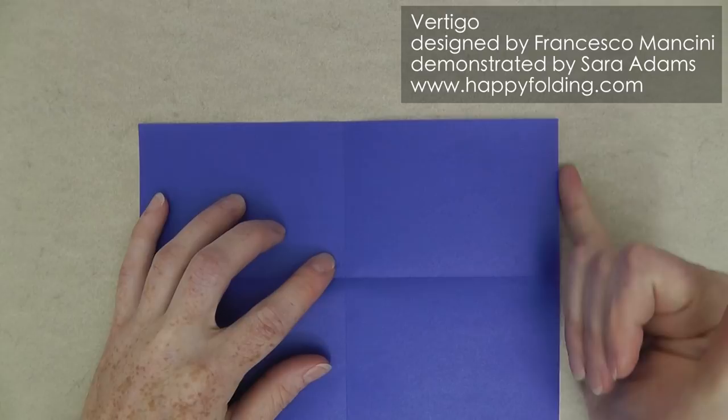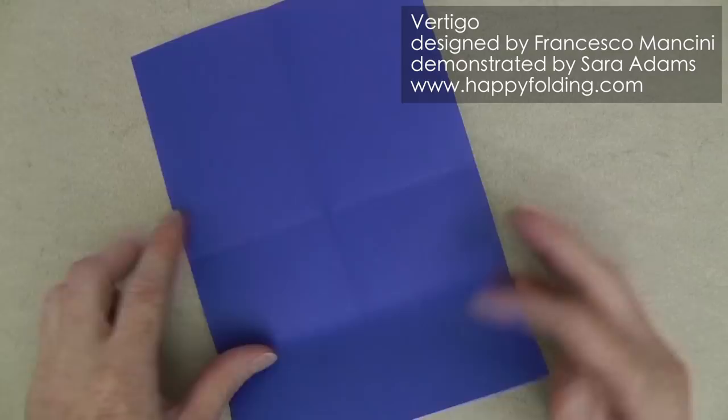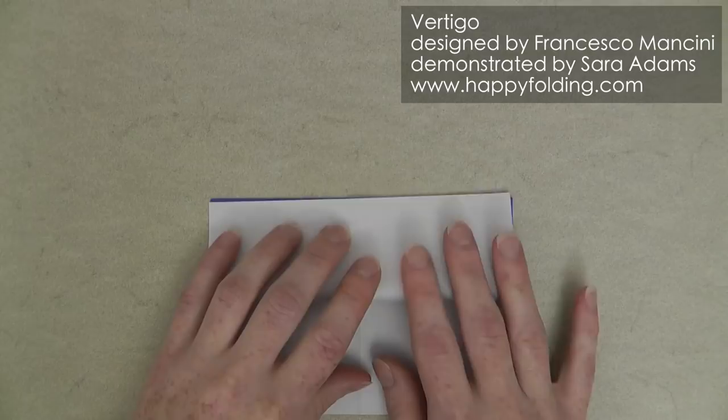Unfold, now bring the edge to the central crease line, and you might even want to reverse this crease, so that it's easier to see where that crease is. Same on the other side.